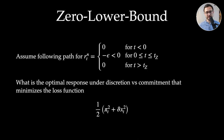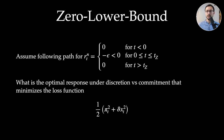Now what is the optimal response under discretion or commitment that maximizes welfare in this model? We have shown this is equivalent to minimizing a loss function that sums two variances: variations in inflation deviations plus variations in the output gap weighted by parameter vartheta, which is the ratio of the slope of the new Keynesian Phillips curve divided by the demand elasticity parameter.